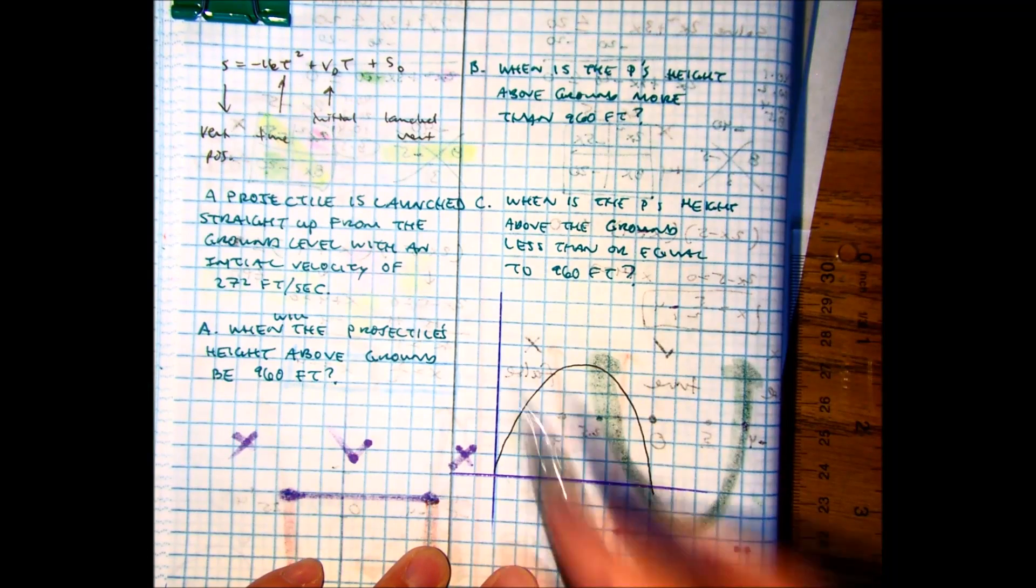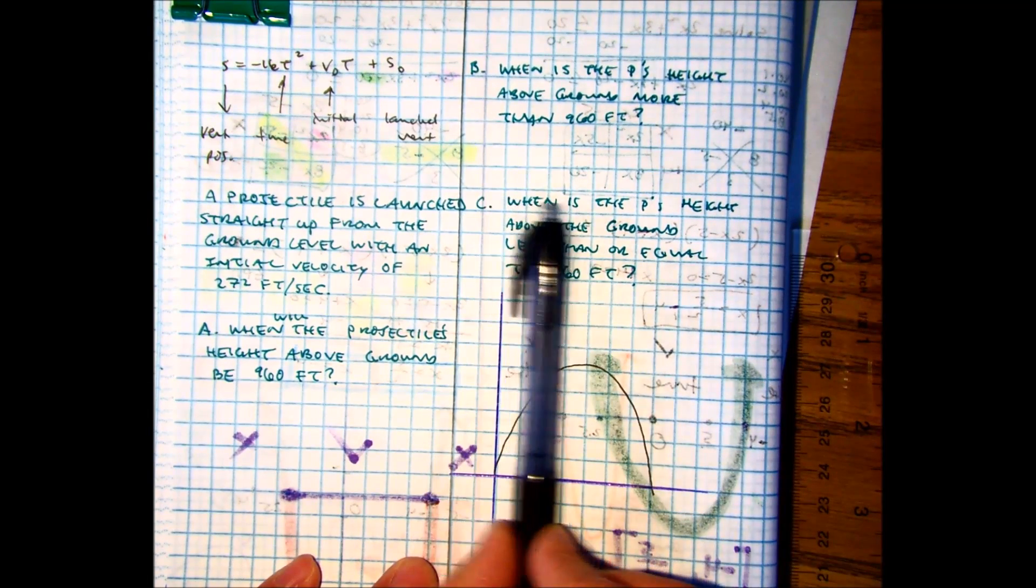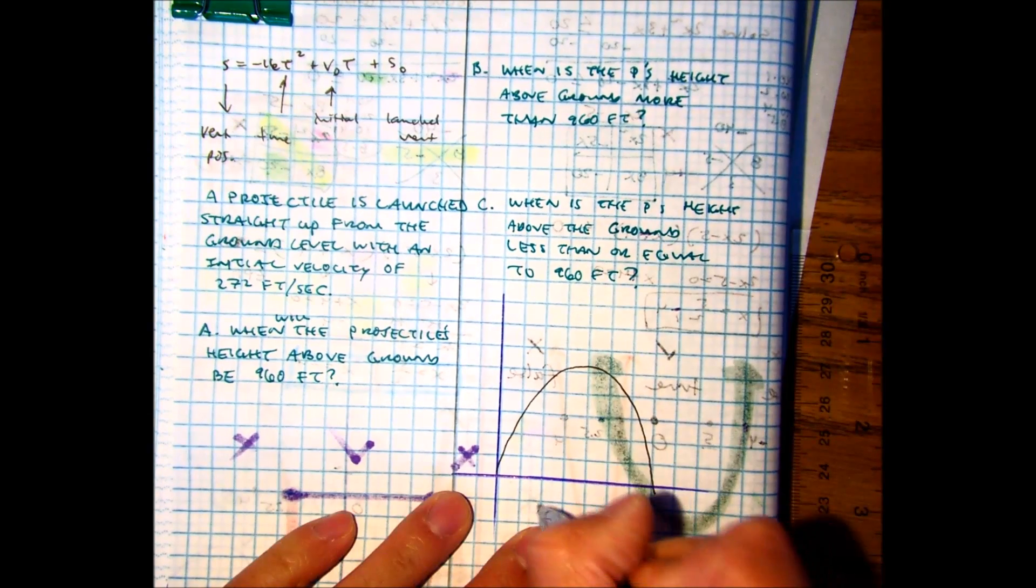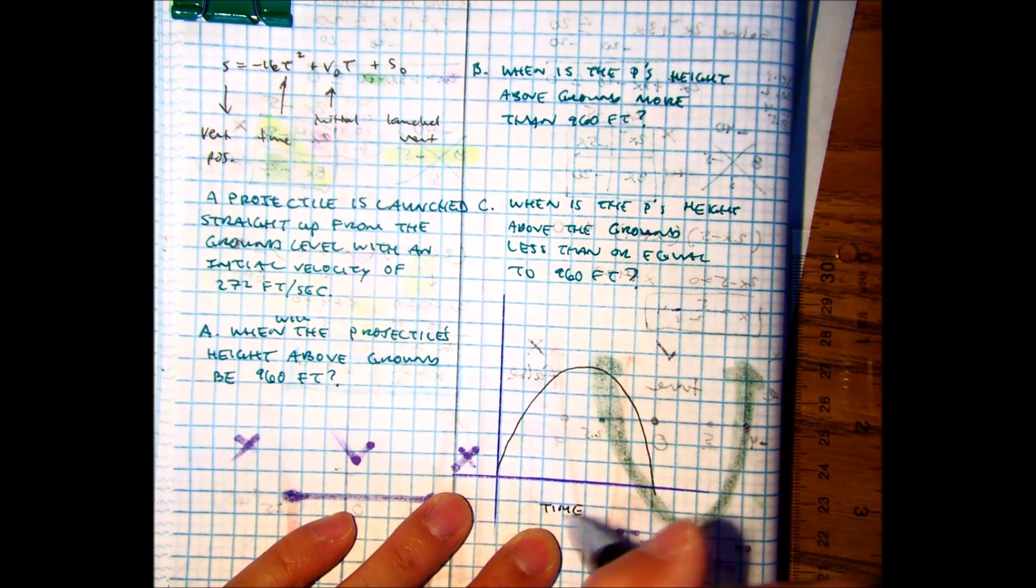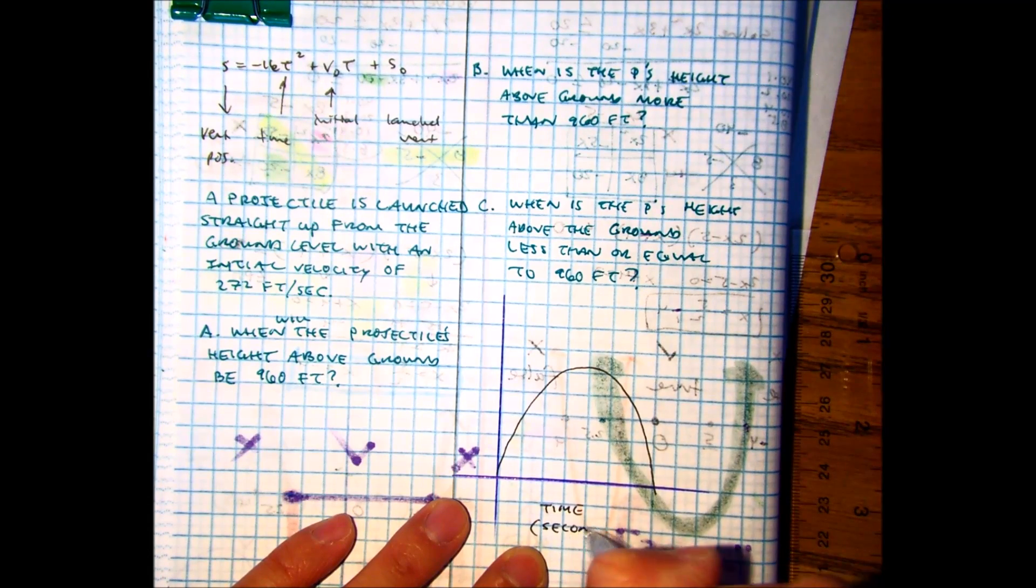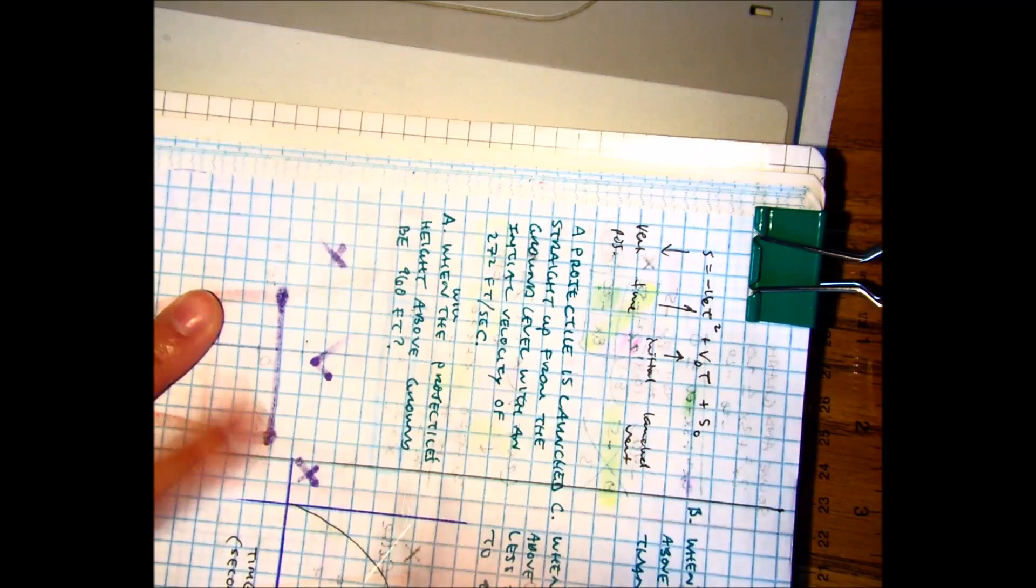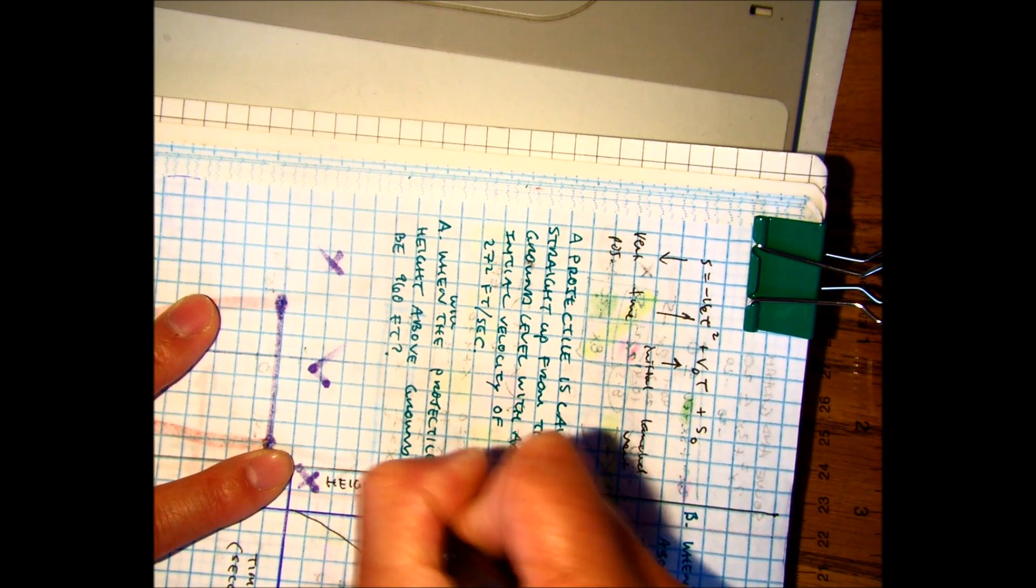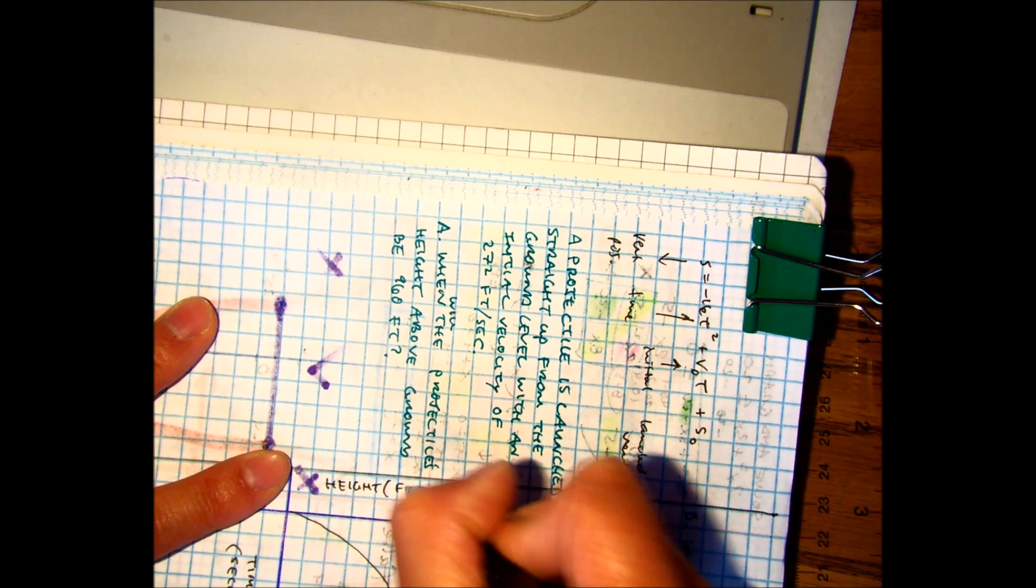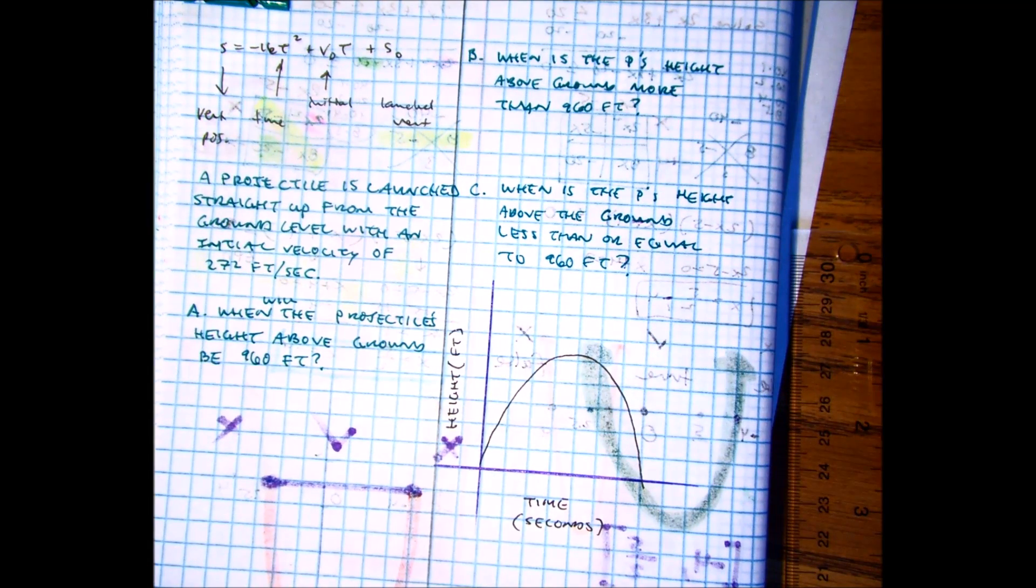So if you think about what's happening, slow motion like a movie, this is representing time measured in seconds. And then this one is height measured in feet. Everyone say label. I want to see labeled pictures.